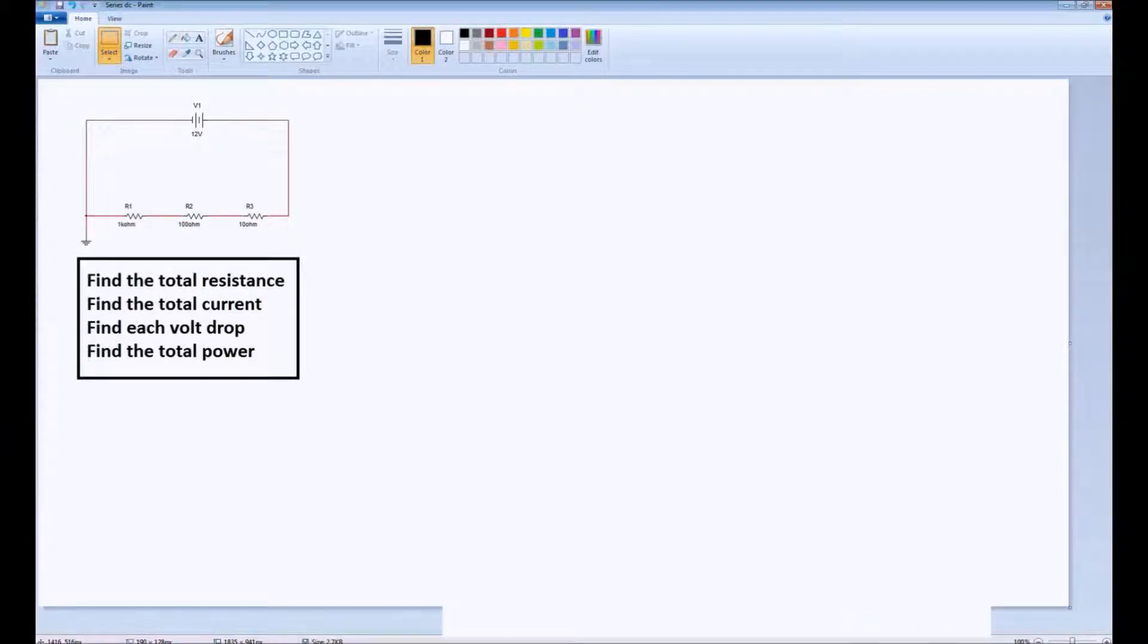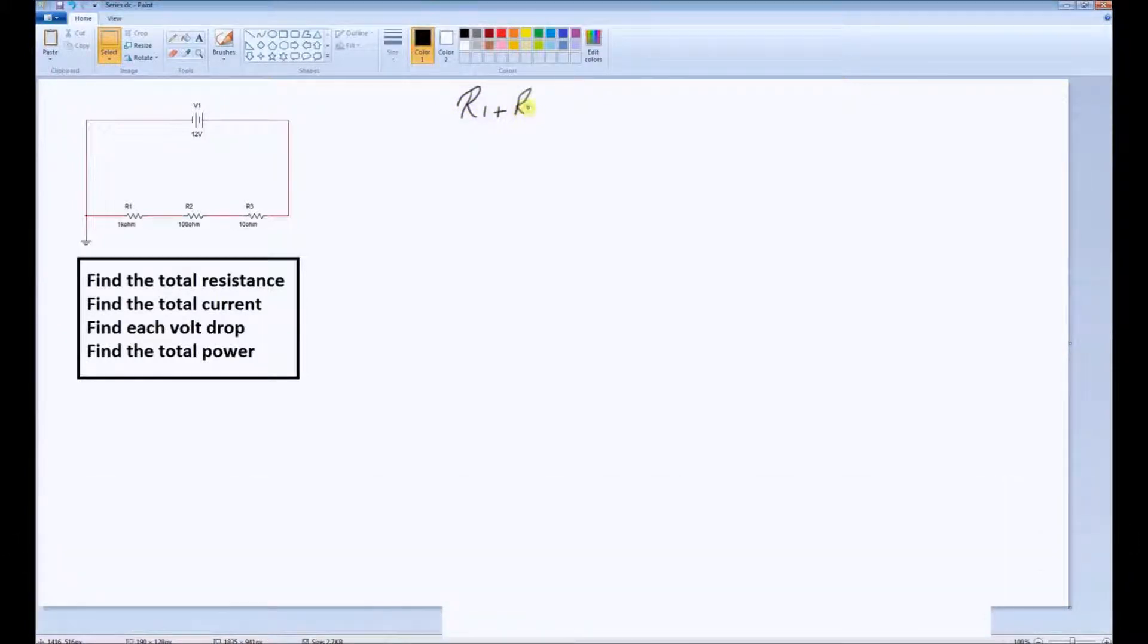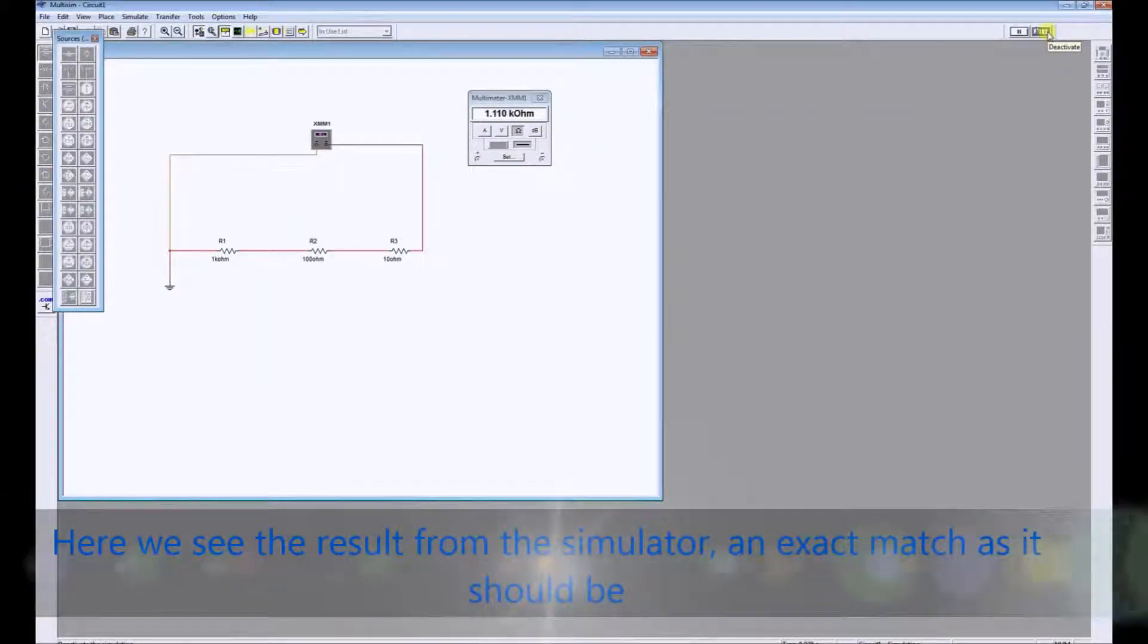With this type of circuit, the first stage is always to find the total resistance. For a series circuit, that's very simple, you just add each of the resistances together. When we add their values, we get 1000, plus 100, plus 10. Therefore, the total value, in terms of resistance, for a series circuit, is 1110 ohms.